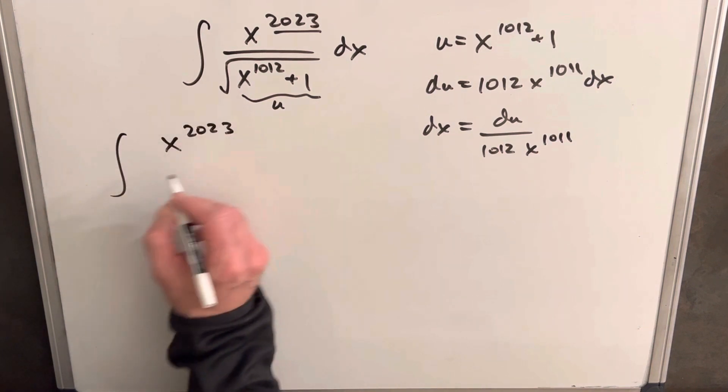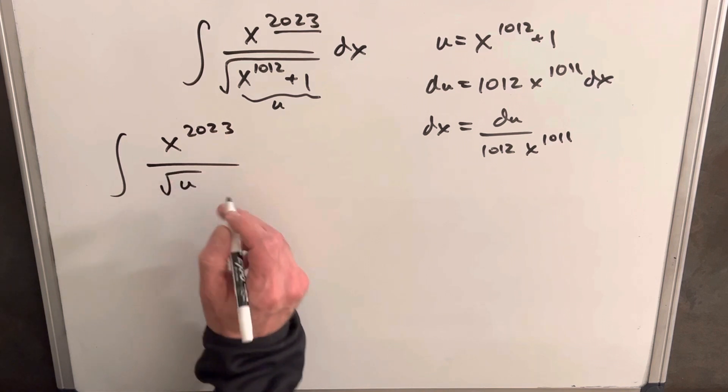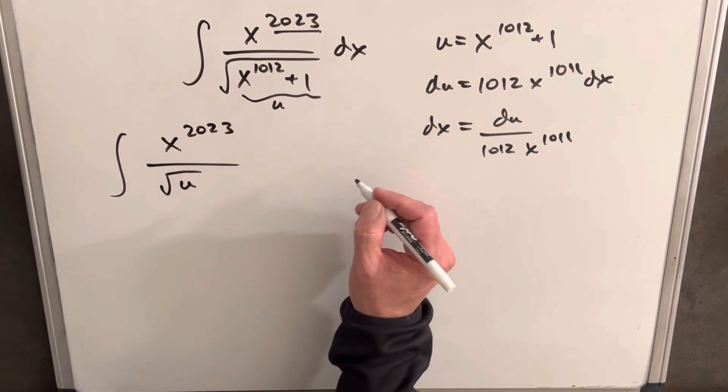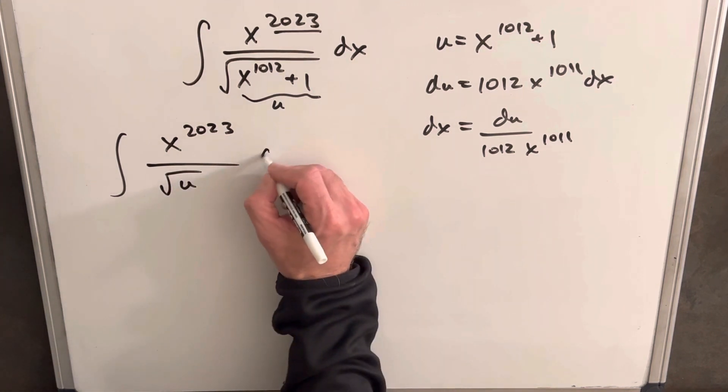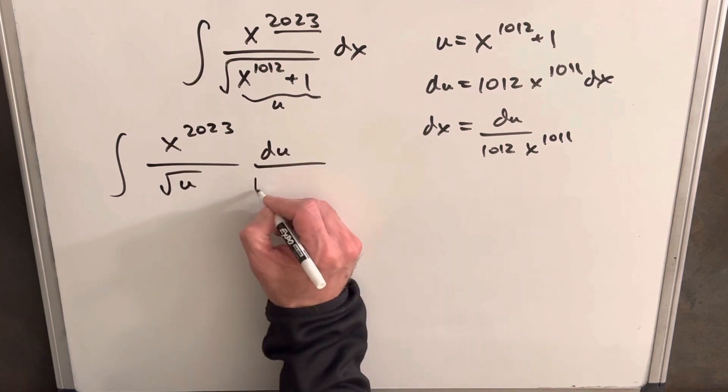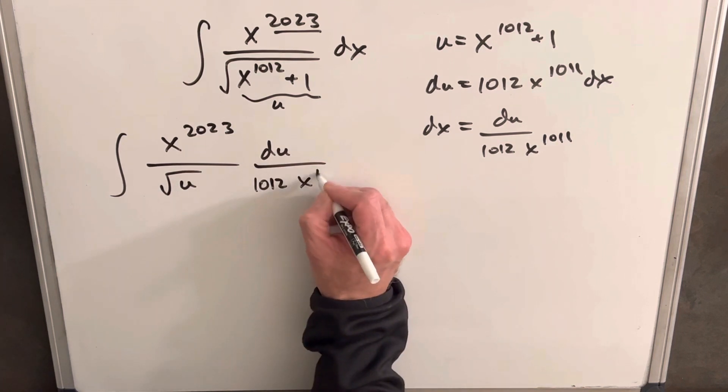For now we'll leave our 2023 in the numerator, then we're going to have square root of u in the denominator because we made that as our substitution, and then dx is going to be du over 1012 x^1011.